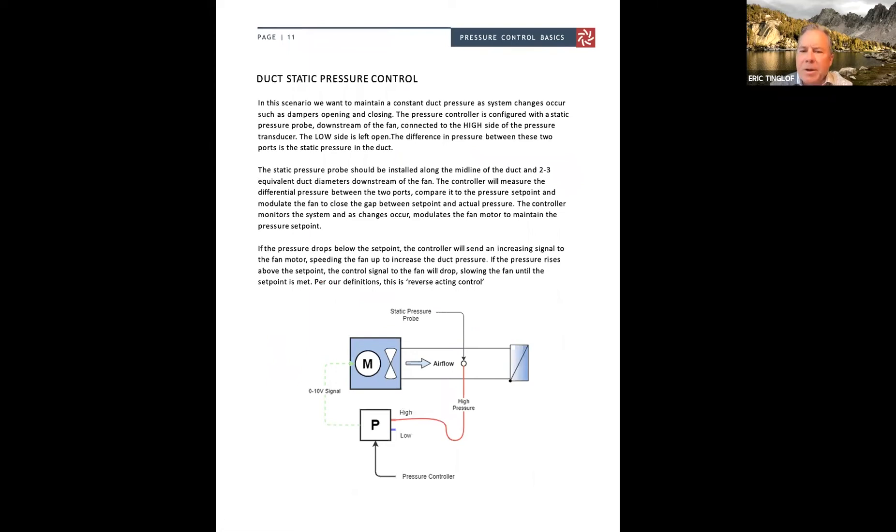So let's talk about a couple different scenarios here. If we're just trying to measure duct static pressure control, you'd have a static pressure probe mounted in the ductwork, and then you would connect that static pressure probe on the high side of the pressure control. The low side is left open to the atmosphere. And then as the pressure rises above our preset set point, the control signal to the fan drops. So that's what's called reverse acting control. The difference in the pressure is the error. We're trying to minimize or remove that error to get us back to set point.